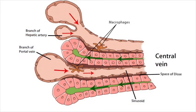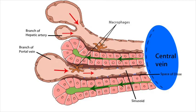The walls of the sinusoids are fenestrated — there are large pores in their endothelial linings. These fenestrations lead to spaces between the hepatocytes and the sinusoids collectively referred to as the space of Disse. Plasma from the blood in the sinusoids passes through the fenestrations to fill the space of Disse, providing nutrients and oxygen to the hepatocytes, which perform metabolic detoxification on the plasma. Most of this plasma returns to the sinusoids and is dumped into the central vein, but some collects in lymphatic vessels. The hepatic sinusoids also contain macrophages that trap bacteria and remove foreign substances from the blood, and natural killer cells that destroy malignant cells.